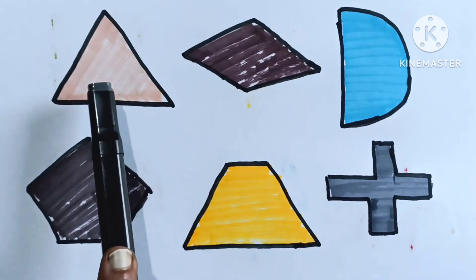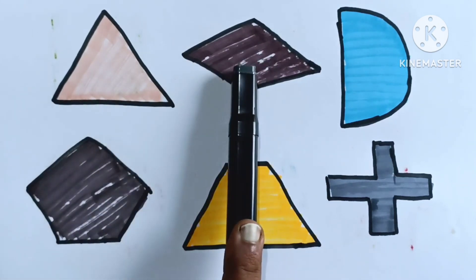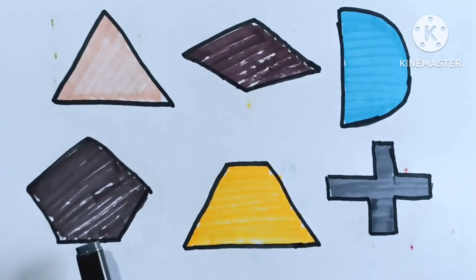Learn 2D shapes. Triangle, diamond, semicircle, pentagon, trapezoid, cross.